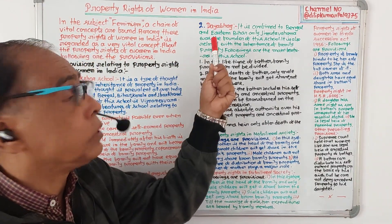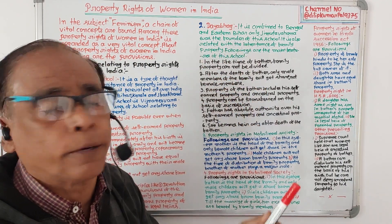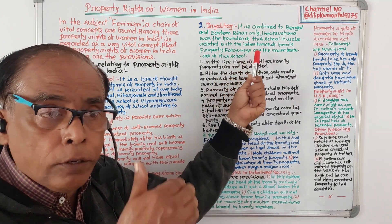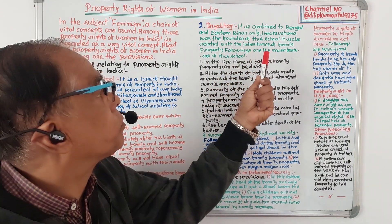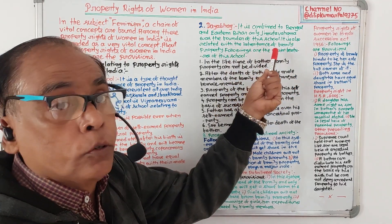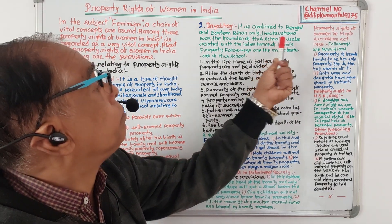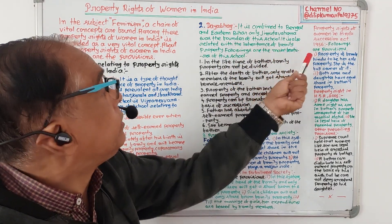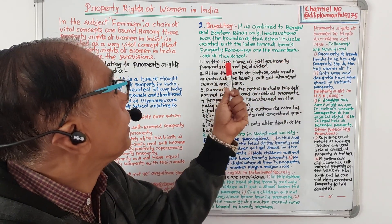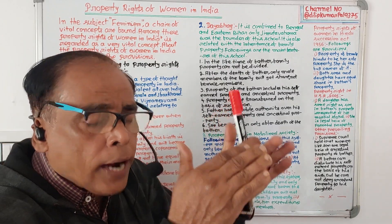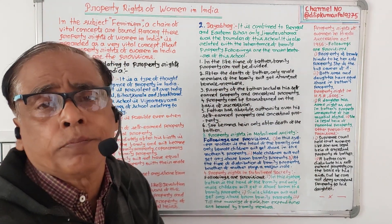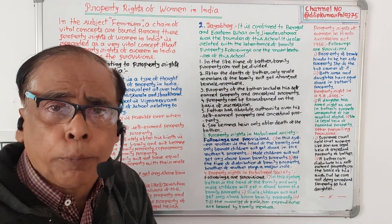Now, the Dayabhaga school — it is another school of thought. It is confined to West Bengal and Eastern Bihar only. Jimutvahana was the propounder of this school. It is also related with the inheritance of family property.